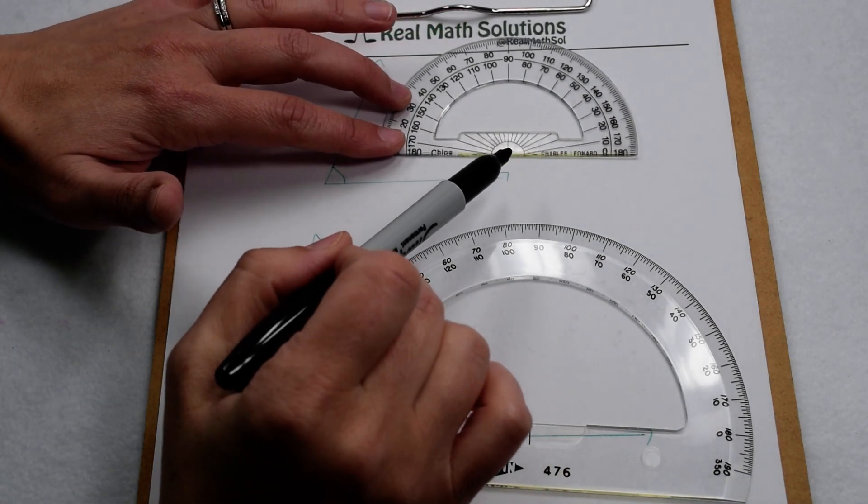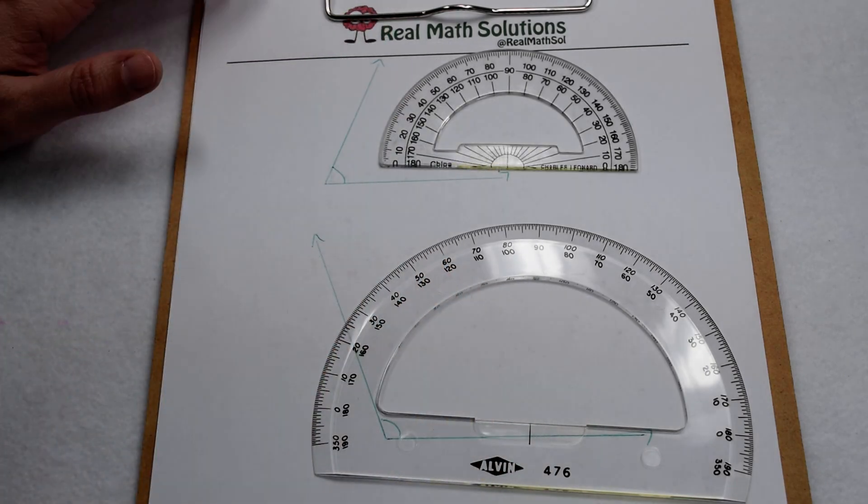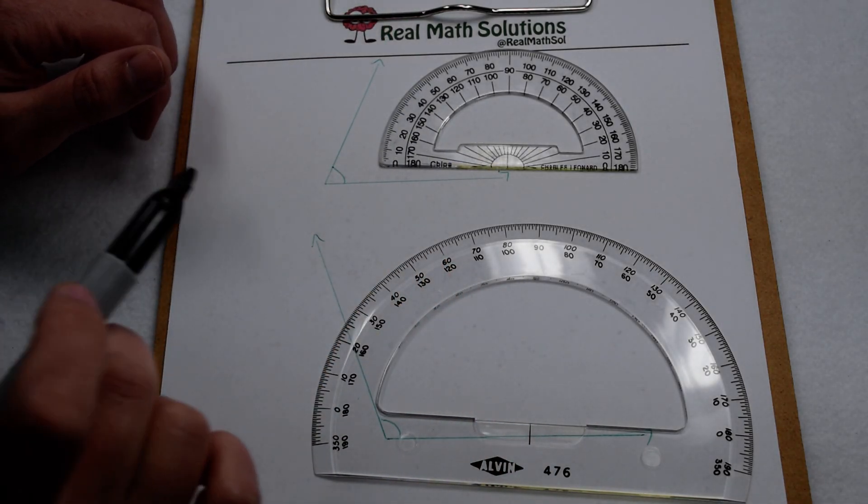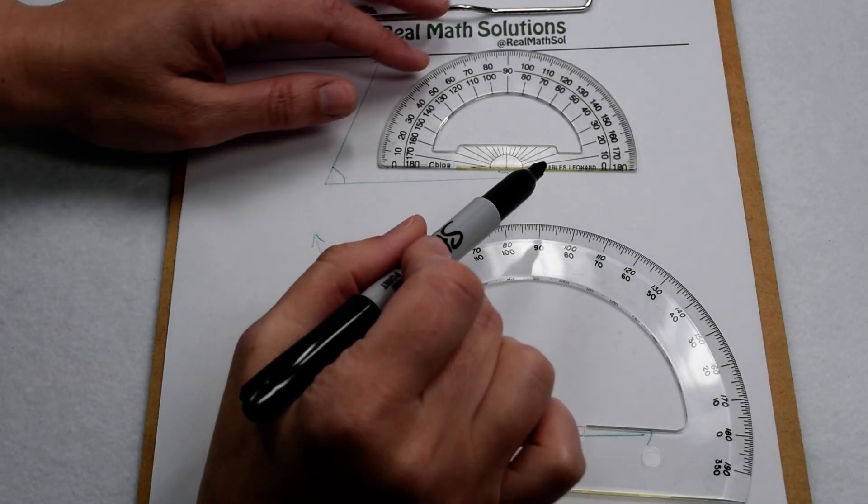Let's start with the small one. I like the small one because when you're trying to measure angles in a book or on a test, it's smaller and doesn't take up as much room to try and get everything lined up. But it doesn't have a hole to guide us.